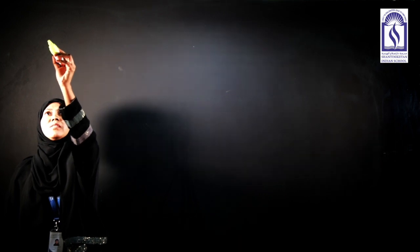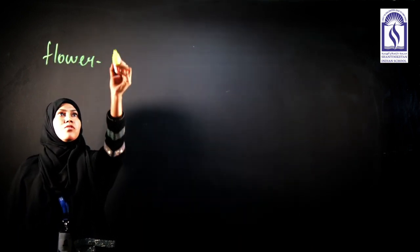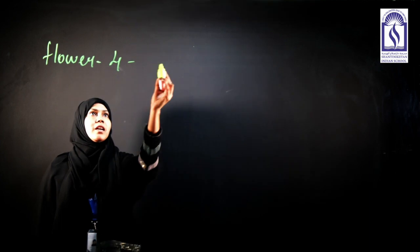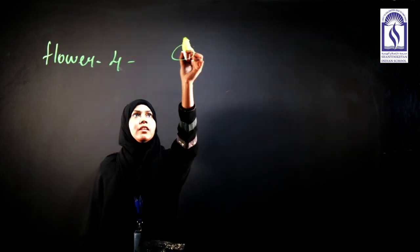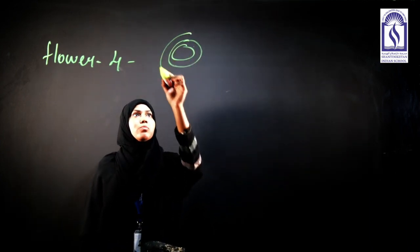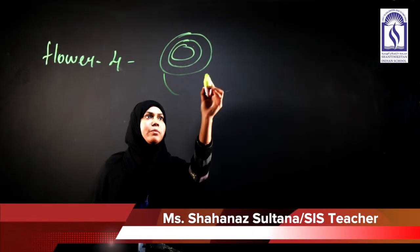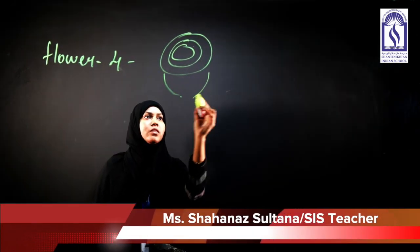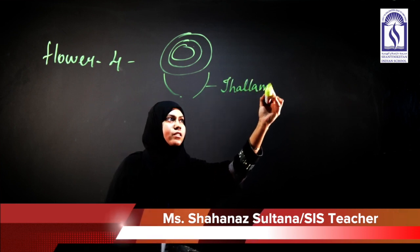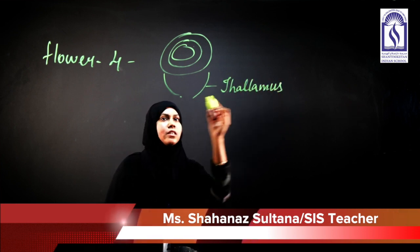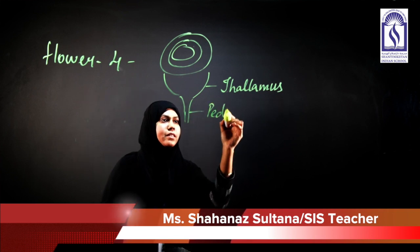A flower has four main parts, and the parts are arranged in rings. The cup-shaped structure is known as the calyx, and the stalk of the flower is known as the peduncle.